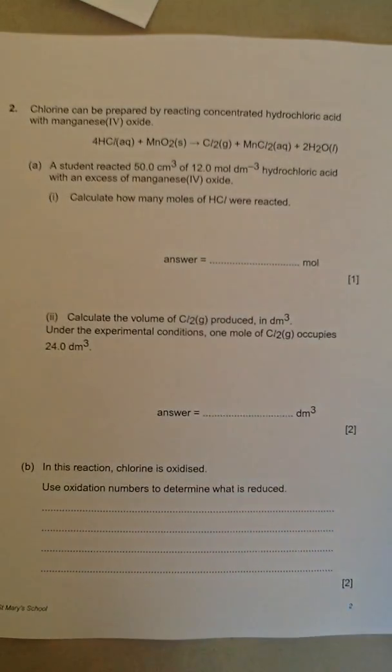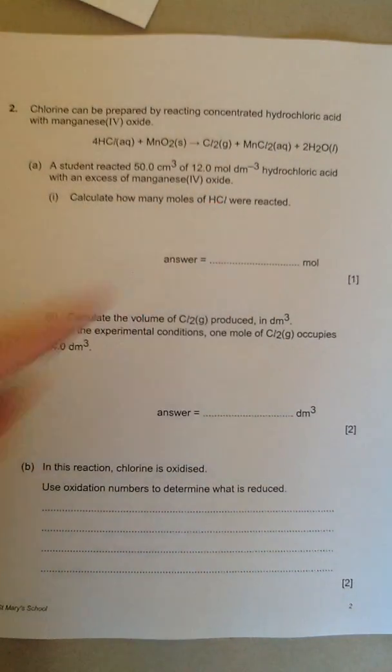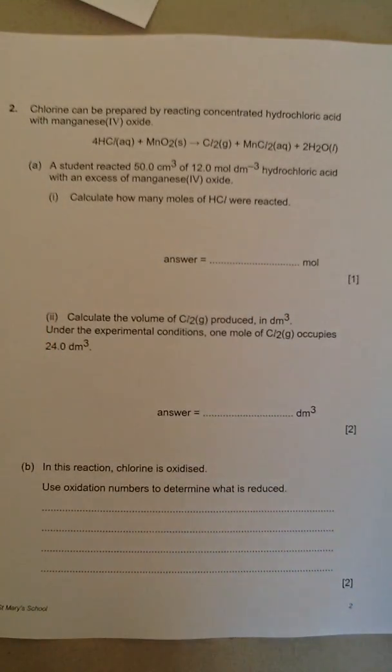So in this type of question, it starts off by asking you to calculate the number of moles of something that we used. Then we're going to use an equation to calculate the number of moles of gas that are produced. And finally, just to conclude, we're going to talk a bit about oxidation and reduction.